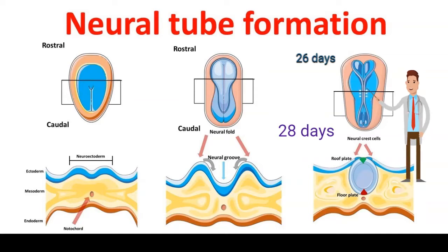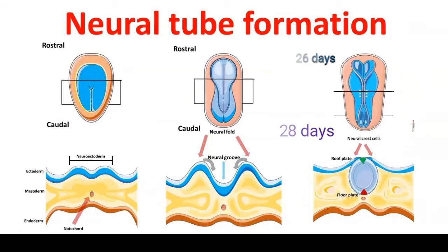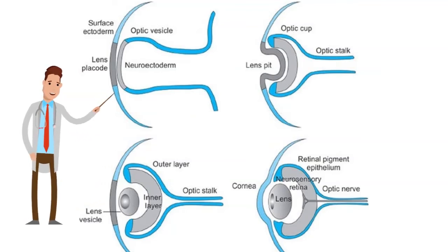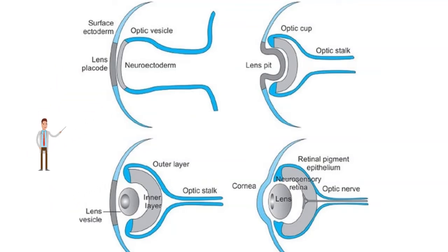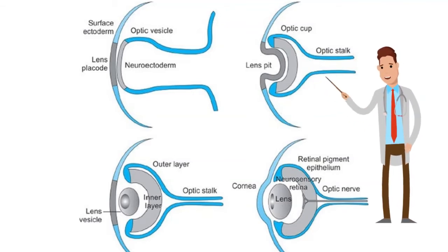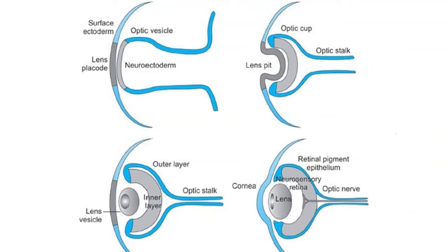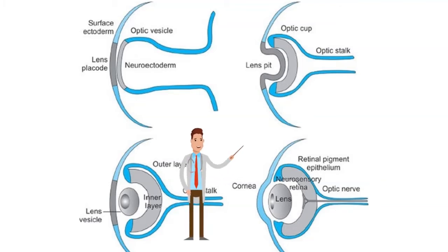At day 23, small primordial eyes will start to form — this is called the optic pit. The optic pit at the cranial part of the neural tube will form an optic vesicle, which will further invaginate to form an optic cup. As the optic cup is invaginating, it will activate the overlying surface ectoderm, forming a lens pit and a lens vesicle, which will be engulfed inside the optic cup.